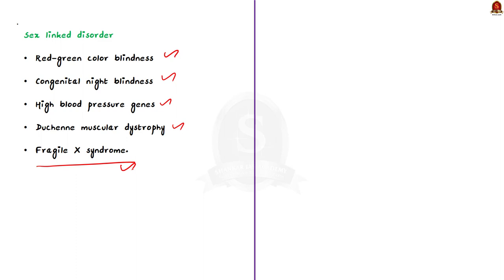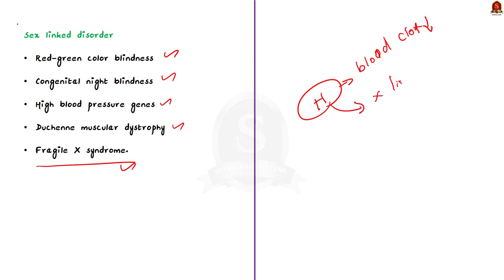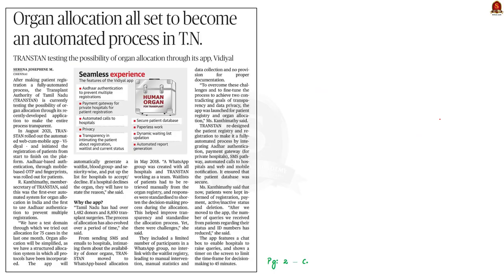Quick recap: hemophilia is a condition in which the ability to form blood clots is reduced. It is an X-linked inherited disease. It affects men more often than women. Women can be carriers of the defective gene but do not get affected due to the presence of an additional X chromosome. These are the takeaway points from this discussion.